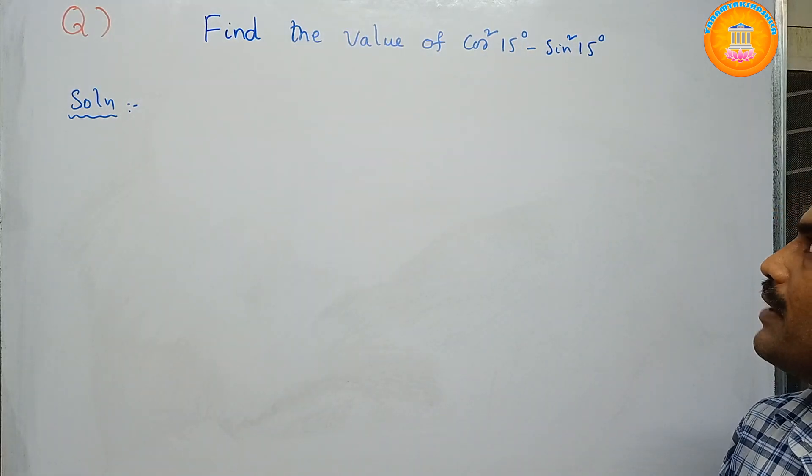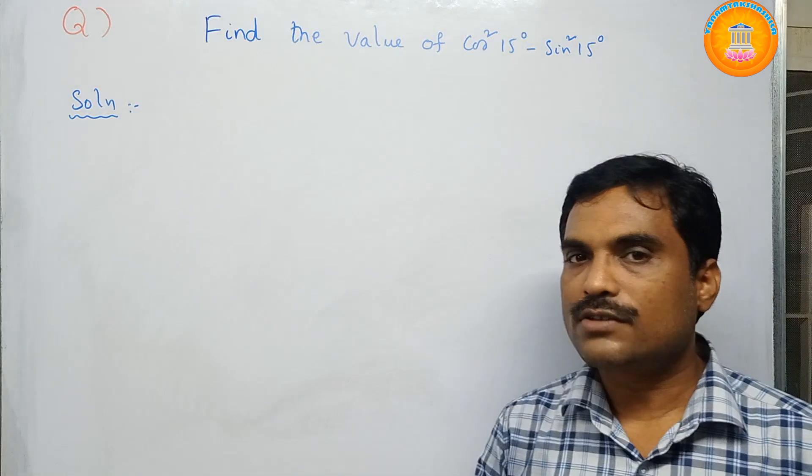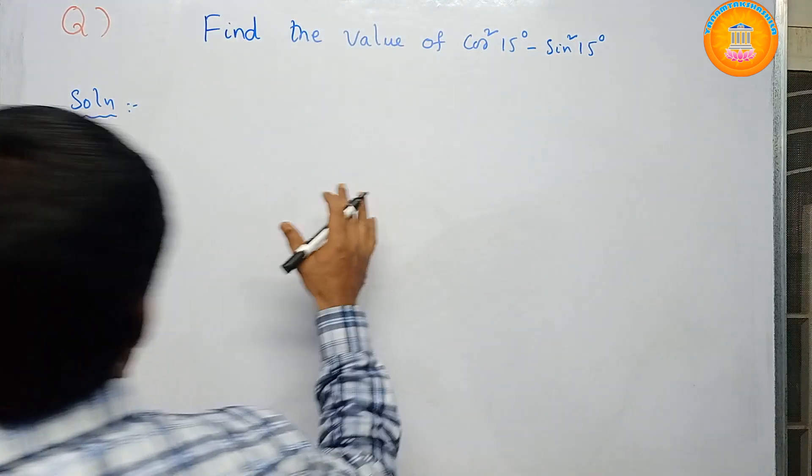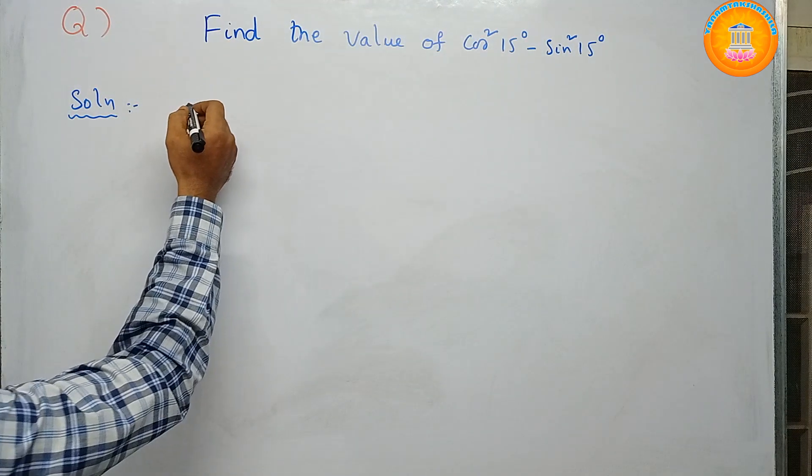The formula is: cos²a - sin²a can be written as cos 2a. So in place of a, you need to put 15 degrees to get the solution. First, write the formula.